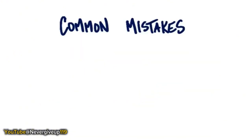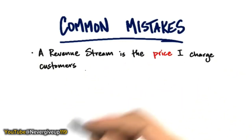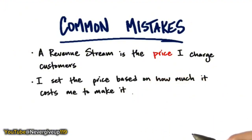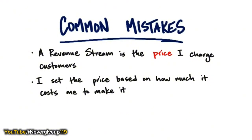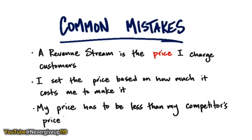The reason I love this lecture is that there's a series of common mistakes that first-time and even experienced entrepreneurs make in thinking about revenue and pricing. The first mistake is thinking revenue stream is just about the price — the dollar amount you're charging customers. That's a mistake. The second mistake is setting price based on how much it costs to make the product. The third common error is assuming your price has to be less than your competitor's price — thinking if they charge $5,000, you should charge $4,000. We're going to see that's another going-out-of-business strategy.